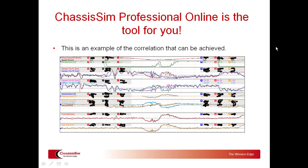What we've got here is an example of the correlation you can achieve using ChassisSim Professional Online. Actual data is coloured, simulated is black, and as you can see there's hardly any difference. What we've got here is speed, throttle, front and rear dampers, steer, lateral and inline acceleration, and our front and rear rolls.